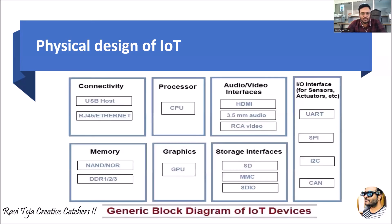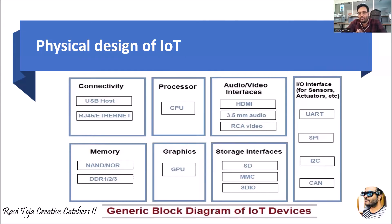Coming to the block diagram of an IoT device, we need several interfaces to accomplish the job of an IoT device. The most important interfaces include connectivity, processor, audio and video interfaces, input/output interfaces like sensors and actuators, and memory, graphics, and storage interfaces.